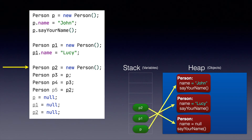We have a person sitting in the heap — this is the third person we are creating. The variable p2 is now pointing to that third person. Since we haven't assigned the name, the name of that person will still be null. So now we have three different objects and three different variables, all of them pointing to different objects.